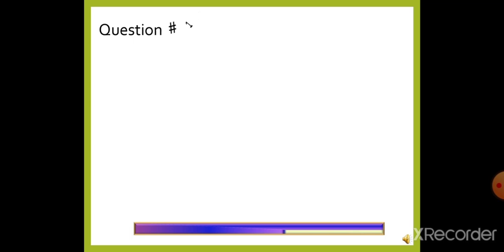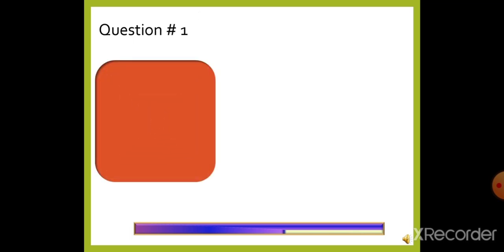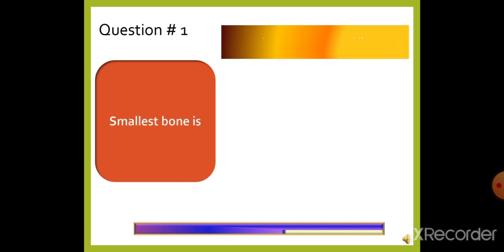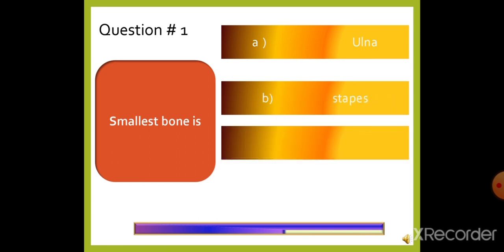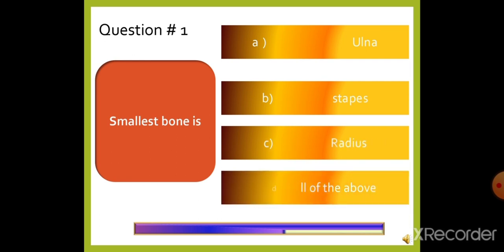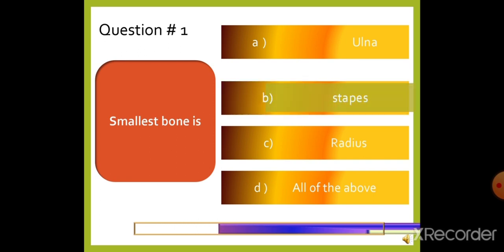Question 1: The smallest bone is — option A: Arna, option B: Stapes, option C: Radius, or option D: All of the above. The right answer is option B, Stapes.